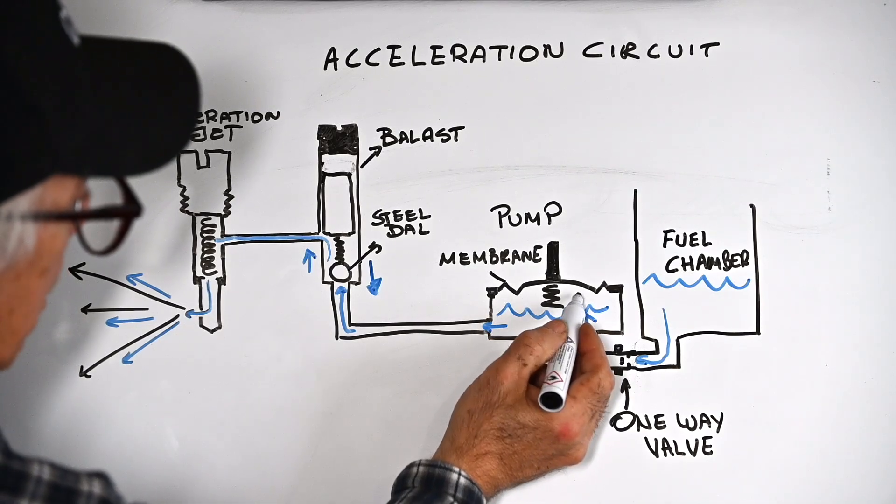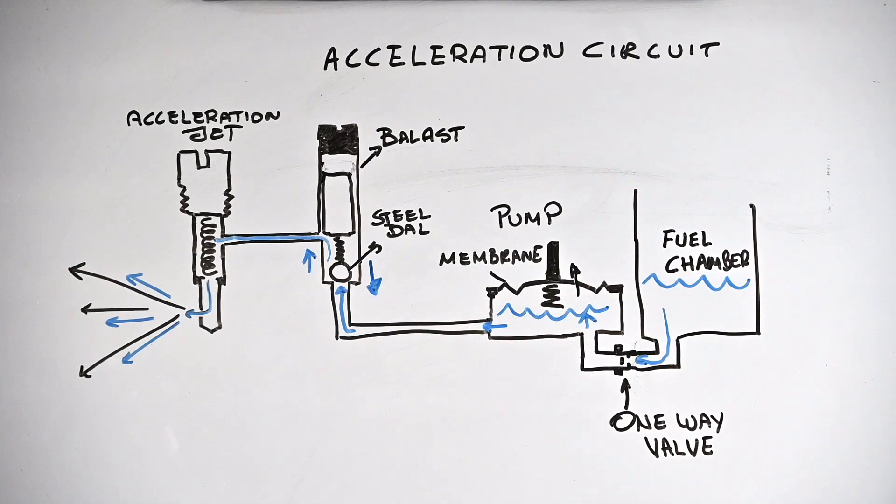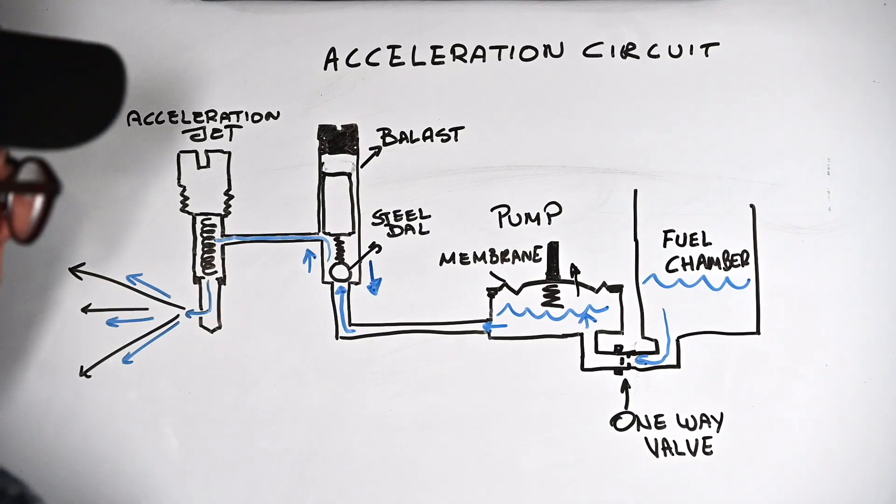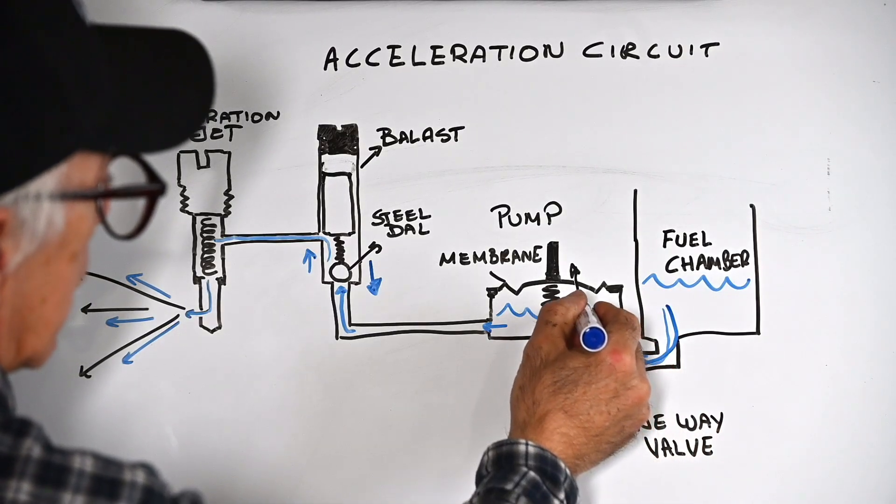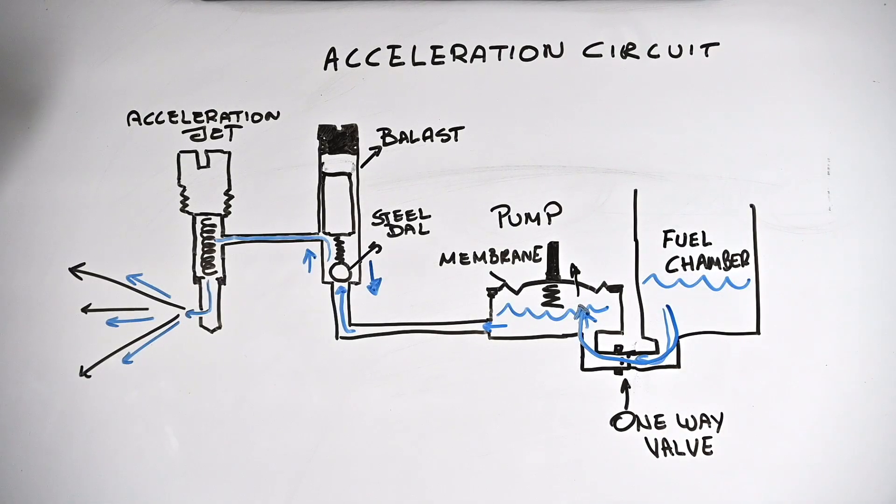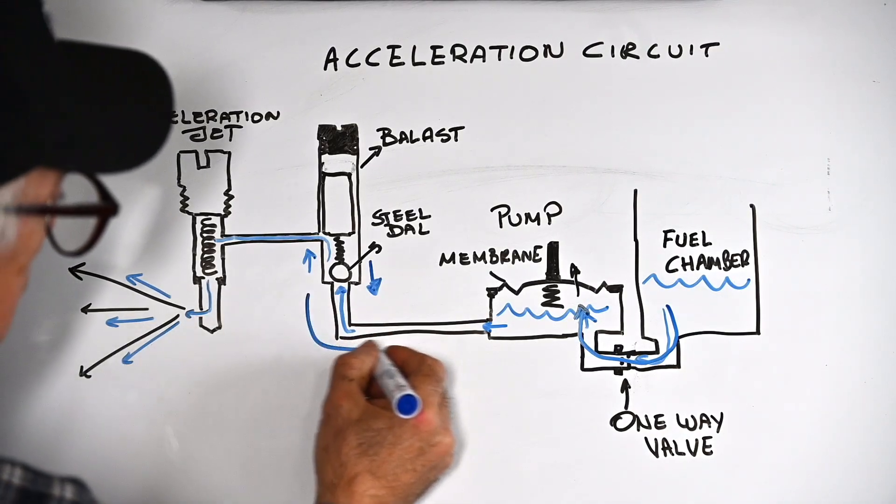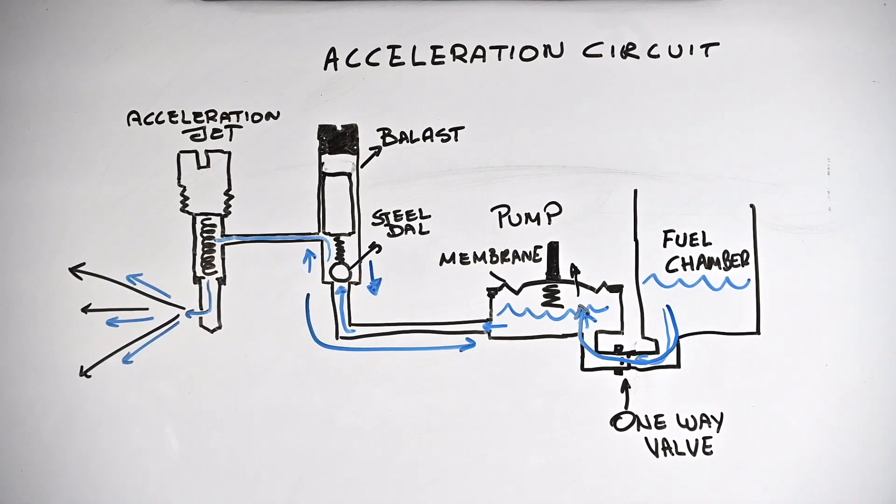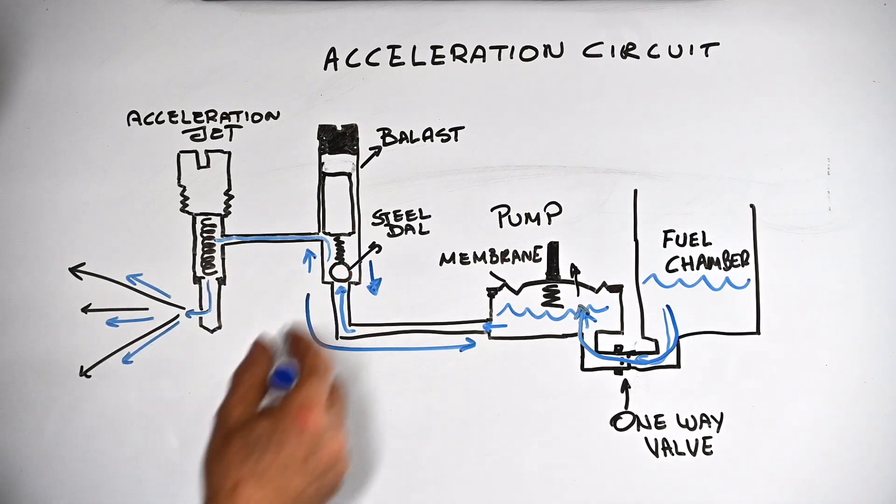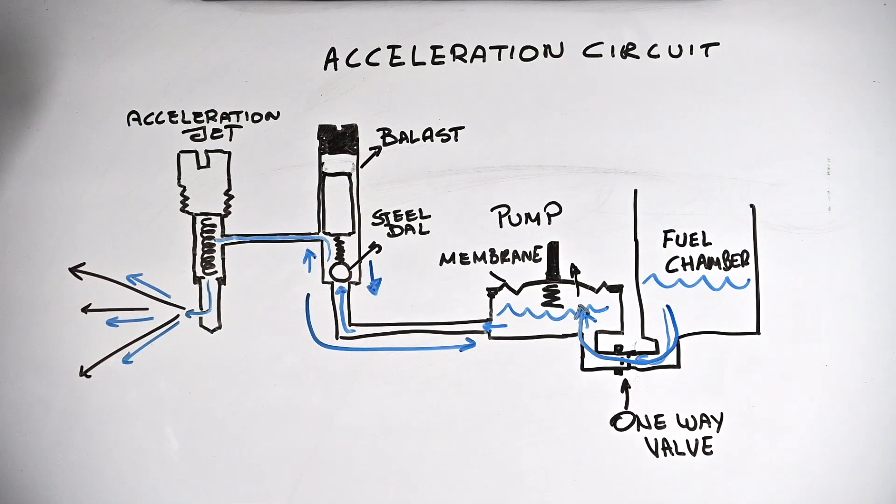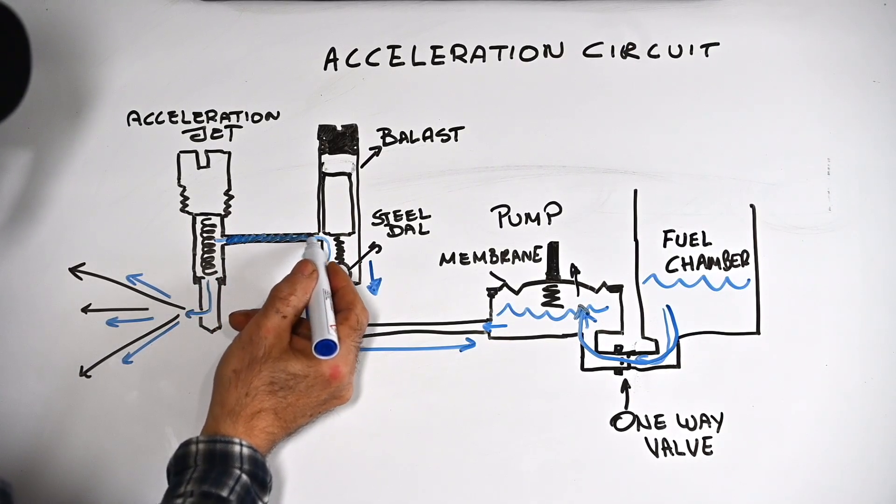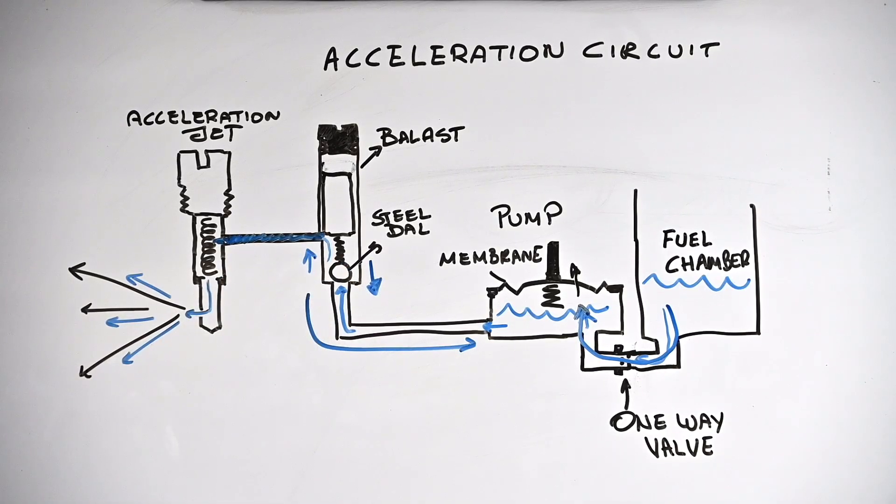This is very important because the membrane, as soon as we let the throttle go, will be pushed up again, and when it does that it has kind of a suction effect. That suction effect should actually get fresh fuel back into the acceleration pump. You don't want to get fuel back this way, that would be very bad. This is why this little ball is there together with the spring and the ballast. In other words, this channel here is almost always going to be filled with fuel after the first time we have accelerated with the acceleration pedal pushing it down. So this is in essence how this is working.